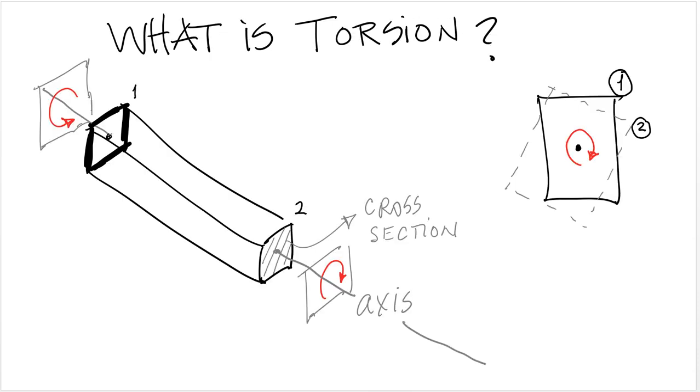What is torsion? Basically torsion occurs when a member, like a beam or a column, is subject to a moment which is in a plane parallel to the cross section.